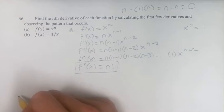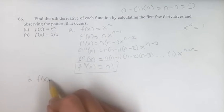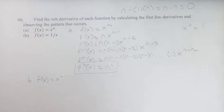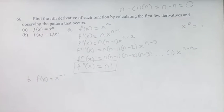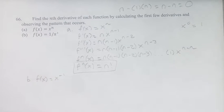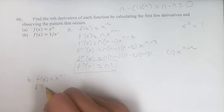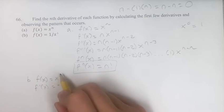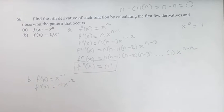We can do a similar thing with part b. We have f(x) = 1 over x, which I'll write as x to the negative 1 — thinking of 1/x as x to the 1 moved to the denominator, multiplying its exponent by negative 1, to get it in the form of a power function. Taking the derivative: bring down the exponent negative 1 and subtract 1 to get the new exponent negative 2.